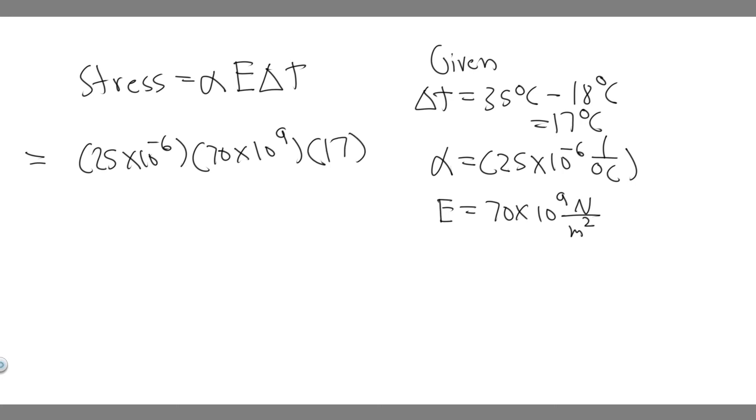So when you go ahead and do this, you're going to find that, just plug in your calculator, 25 times 10 to the minus 6 times 70 times 10 to the 9, and then times it by 17.